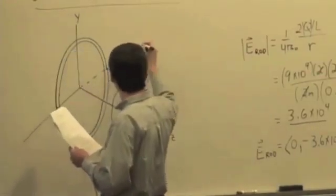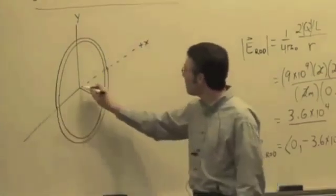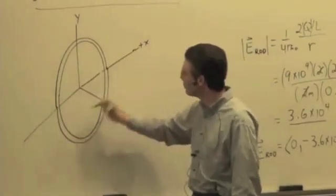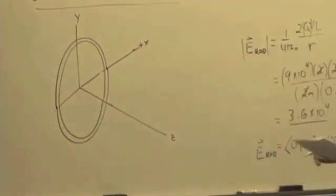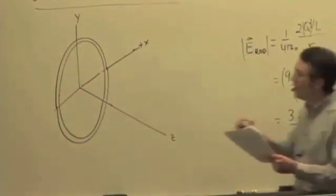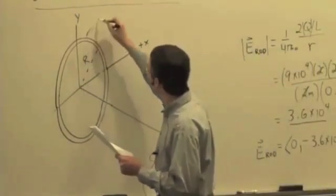And really this is the positive X direction, and this is the negative X direction. So draw it like that. This ring has a radius, we'll call it R, it has a total charge, Q.